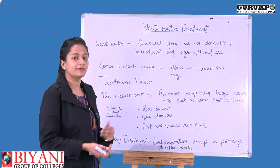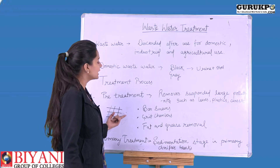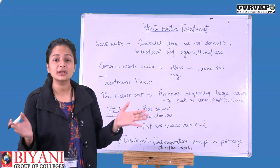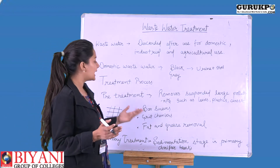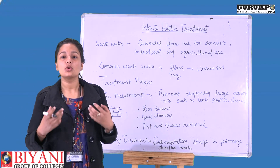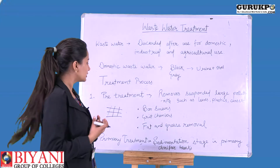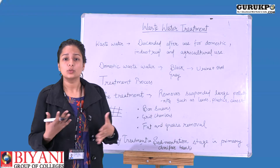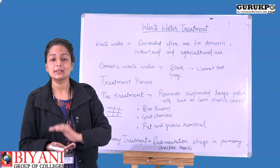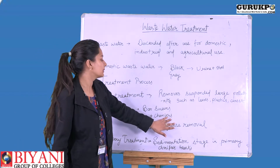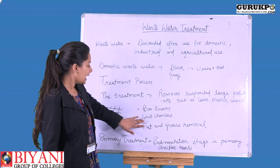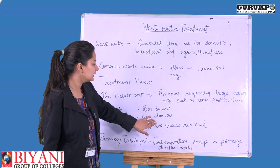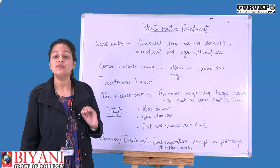Next, after bar screens, we pass our wastewater into grit chambers. Grit chambers are like ponds or tanks in which we add grit — sand or gravel — which causes suspended particles and other pollutants to stick to them or get sedimented. So grit chambers are basically based on the principle of sedimentation: all pollutants get sedimented in grit chambers with the help of grit.